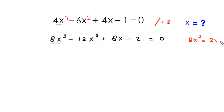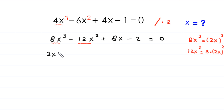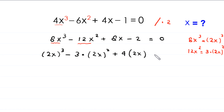Now, 8x³ is the same as (2x)³, and 12x² is the same as 3×(2x)². So we can rewrite the left-hand side as (2x)³ − 3(2x)² + 4(2x) − 2 = 0. We now let y = 2x to simplify.